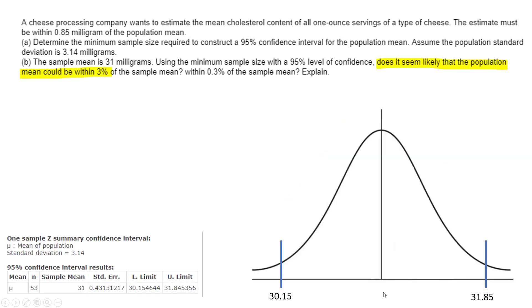So visually, that looks like this. So 30.15, 31.85, which says if we went out and took a whole bunch of samples of a sample size 53, we would expect our population mean to fall within this interval 95 out of 100 times.